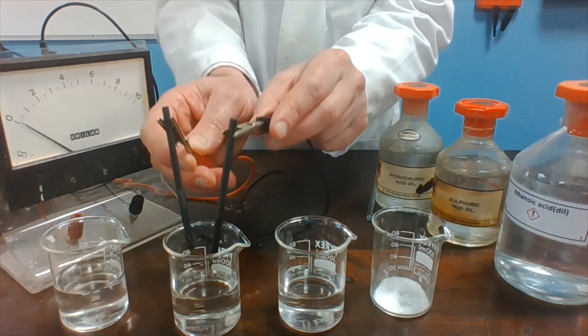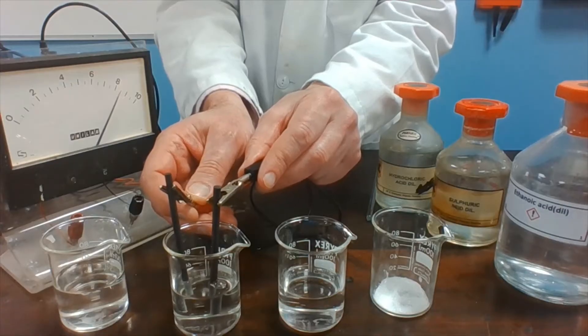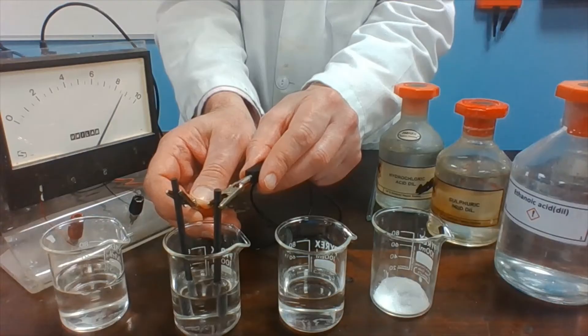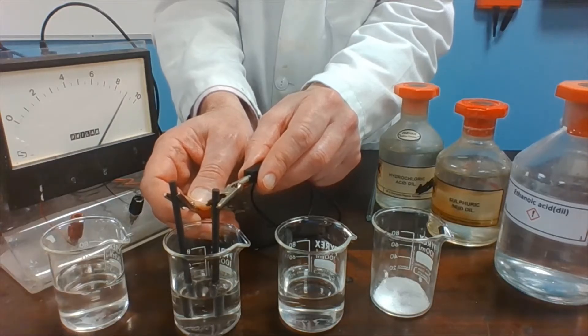If we now move to the sulfuric acid. Again, it registers on the ammeter, so a current is flowing. And once more, you can see bubbles of gas coming off at the electrodes.